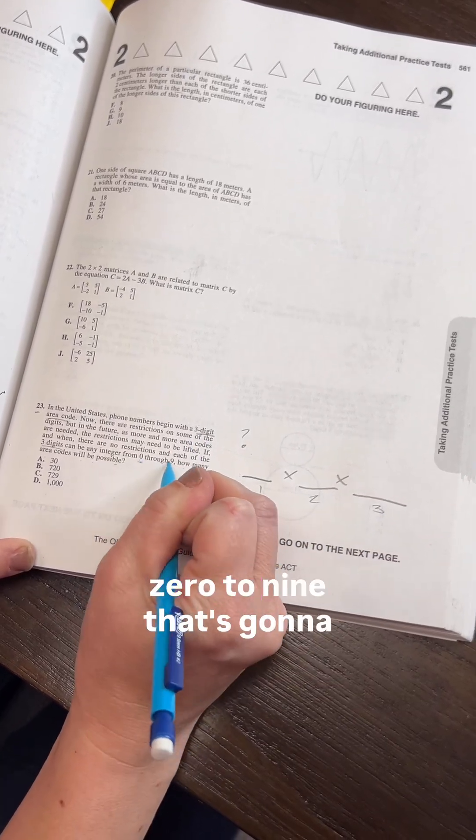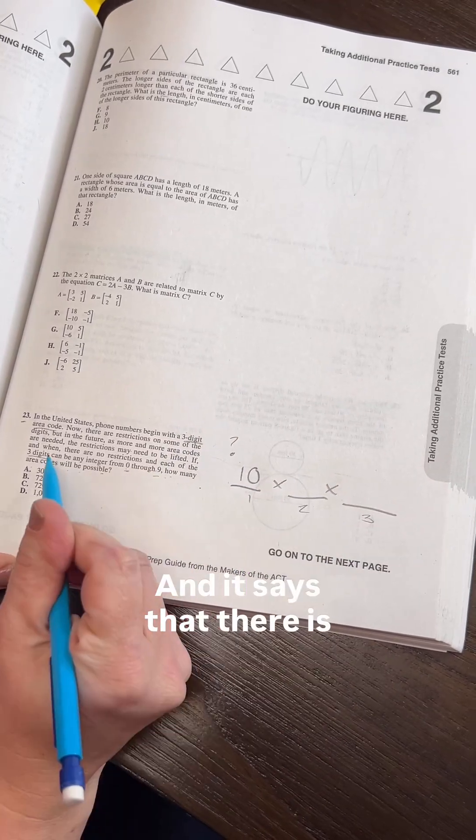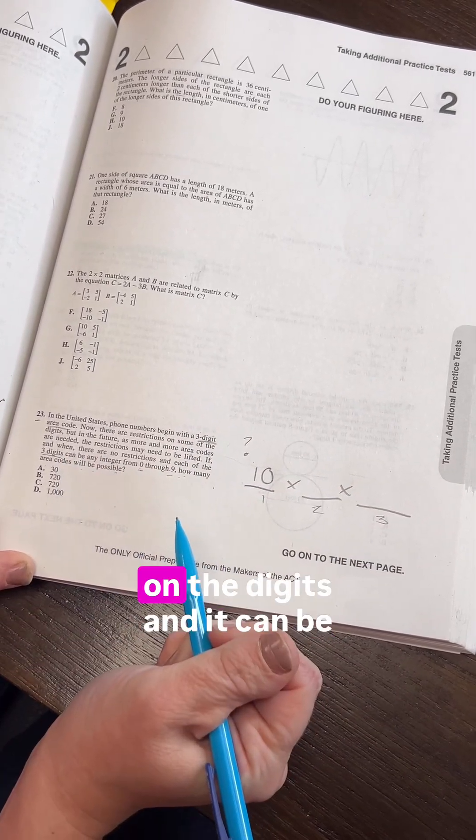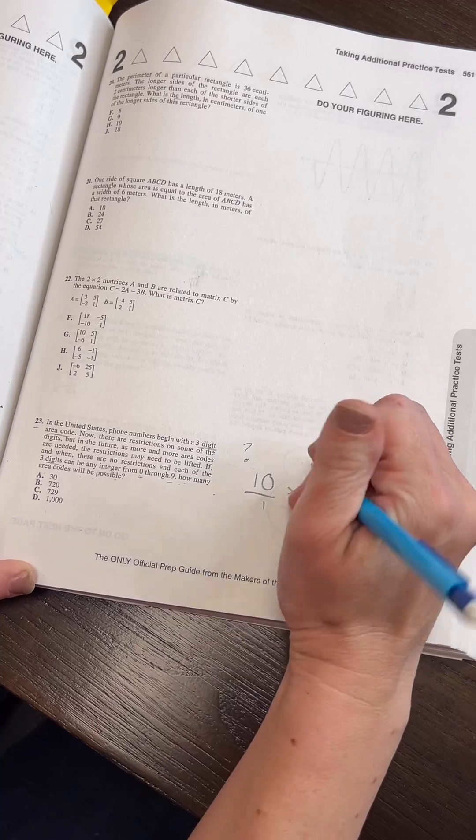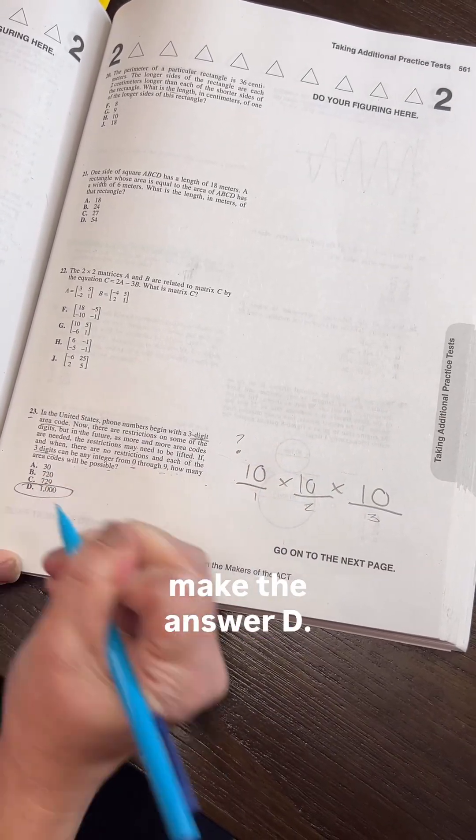Looking through this, 0 to 9 is 10 digits. It says there are no restrictions on the digits and they can be repeated. So it would be 10 times 10 times 10, which makes the answer D.